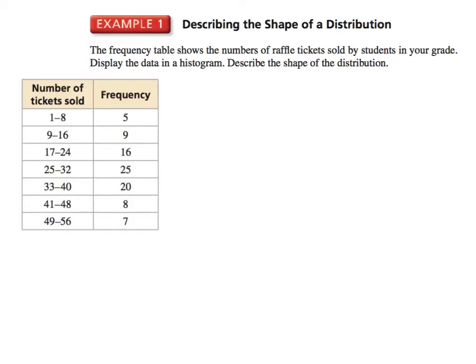In example one, we're going to describe the shape of a problem. The frequency table shows the number of raffle tickets sold by students in your grade. Display the data in a histogram and describe its shape. Here's all of our data, and we are now going to put it into a histogram.